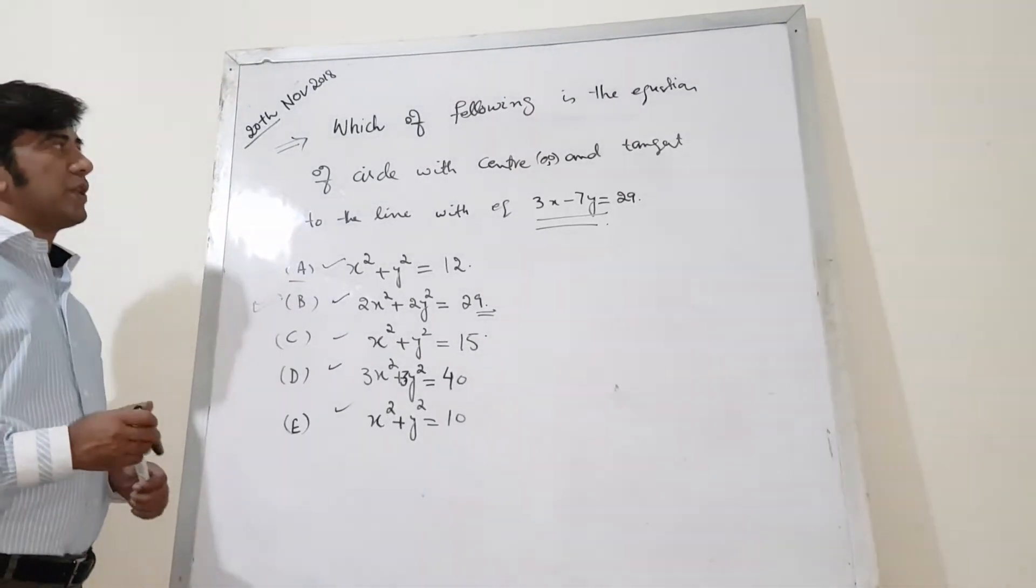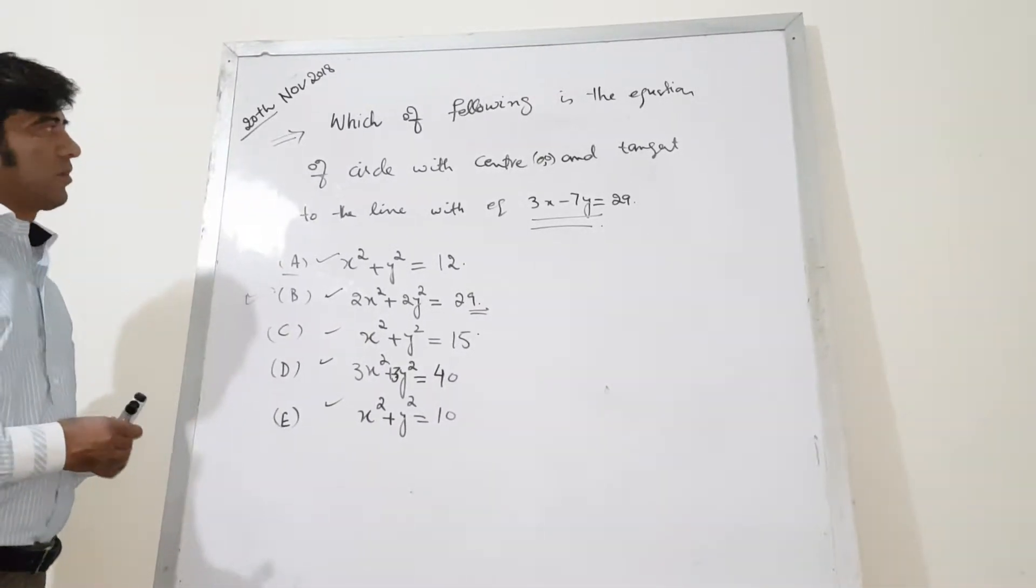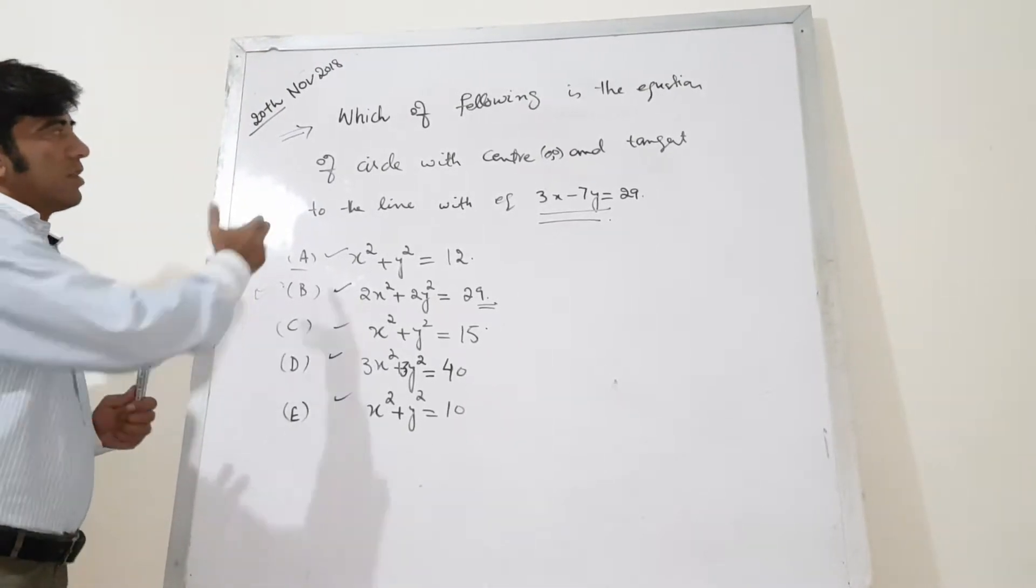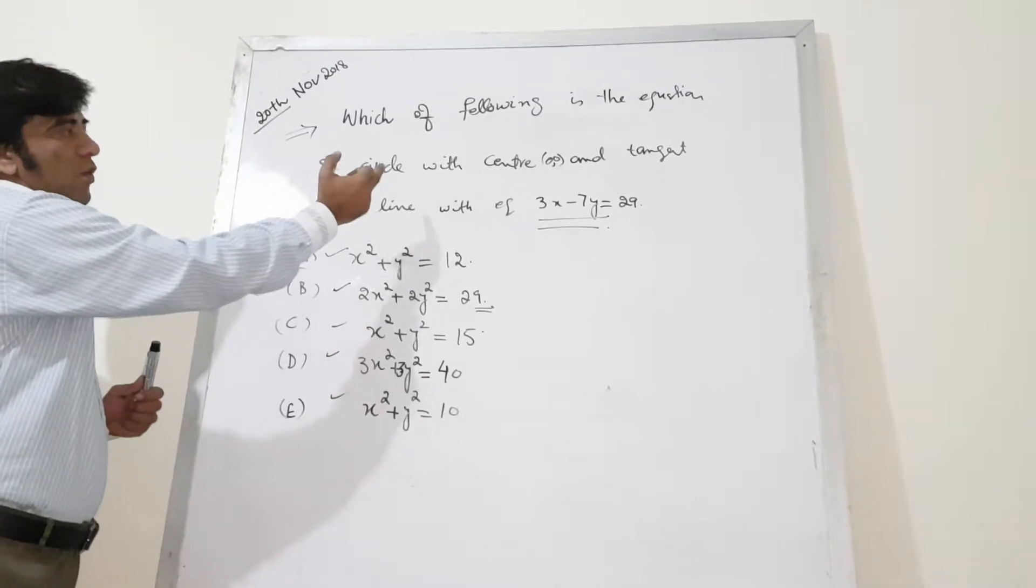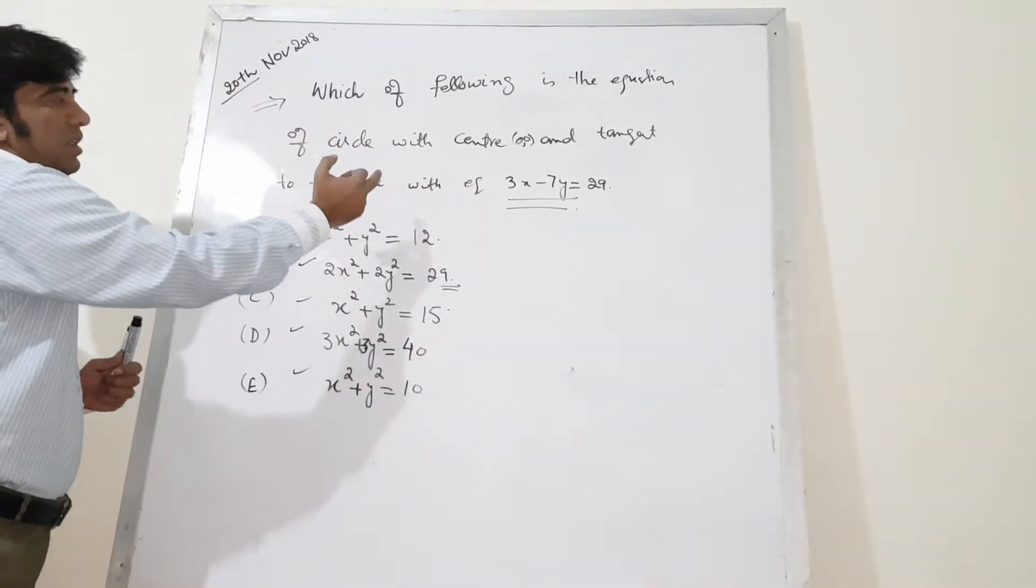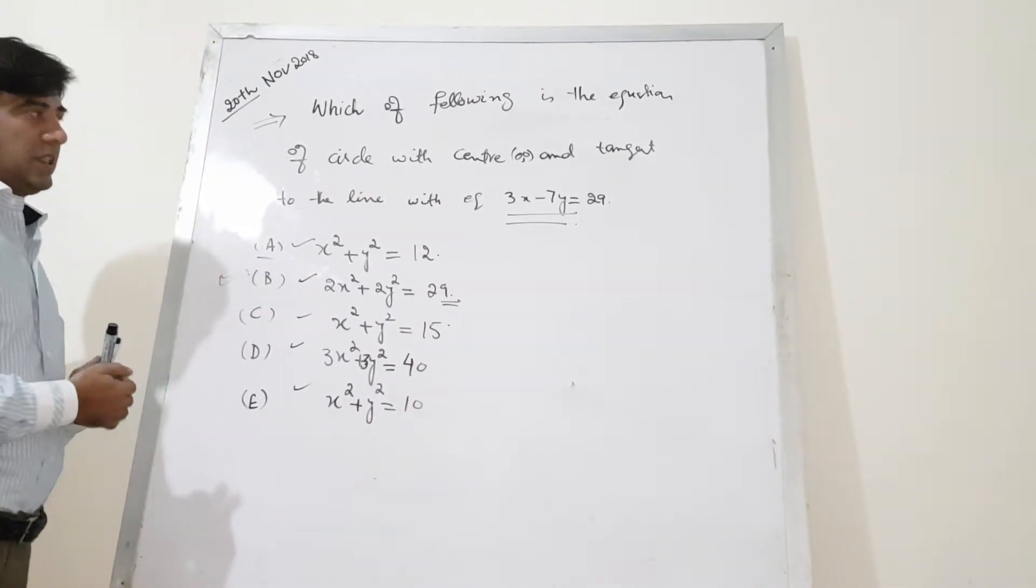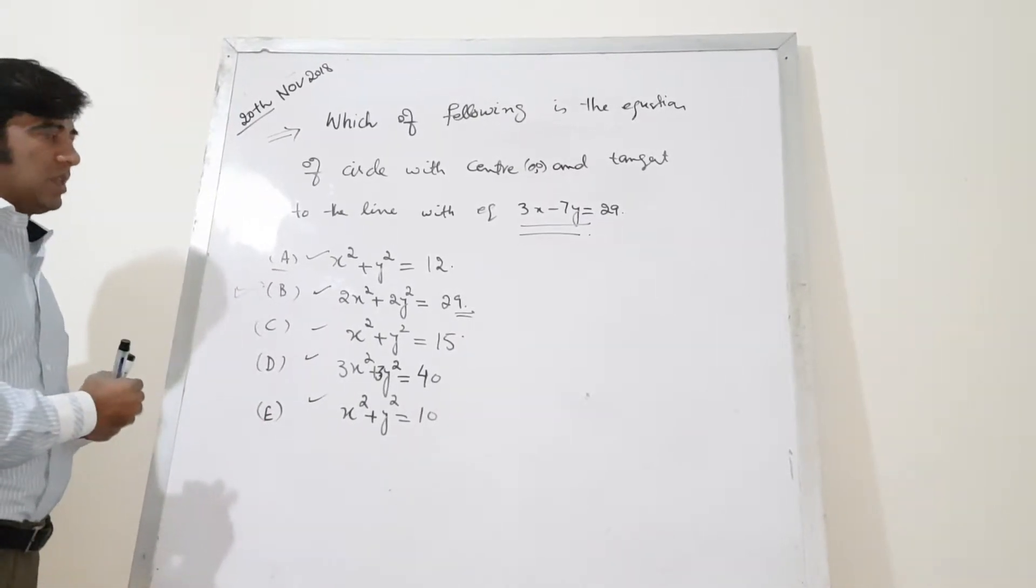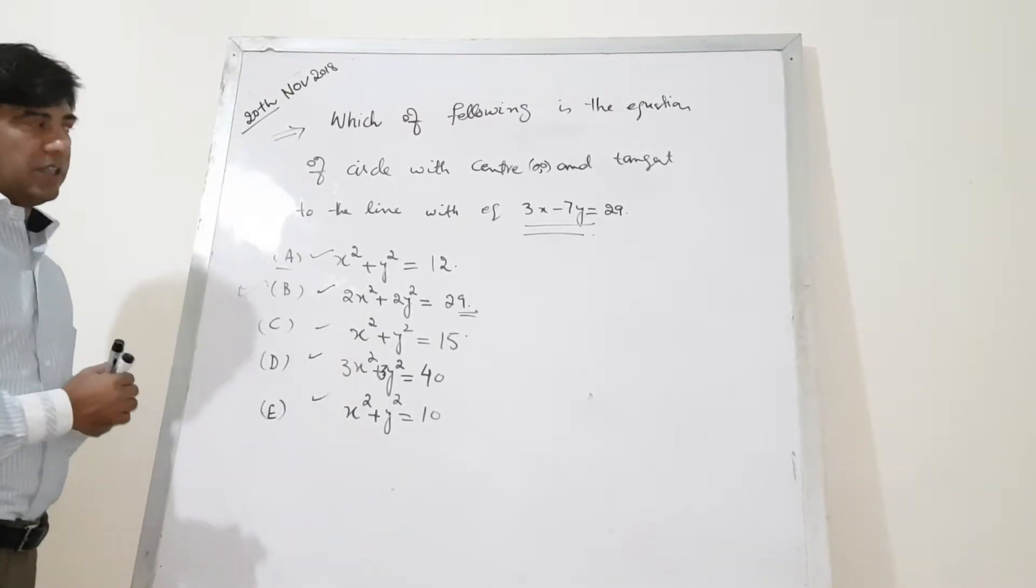Bismillahirrahmanirrahim. Today I want to give you one example relating to conic sections. Generally there are mixed questions. Here the question is: which of the following is the equation of a circle with center at the origin and tangent to the line with equation 3x minus 7y equals 9? Actually there are five equations given and you have to choose that exact equation of the circle which fulfills this condition.